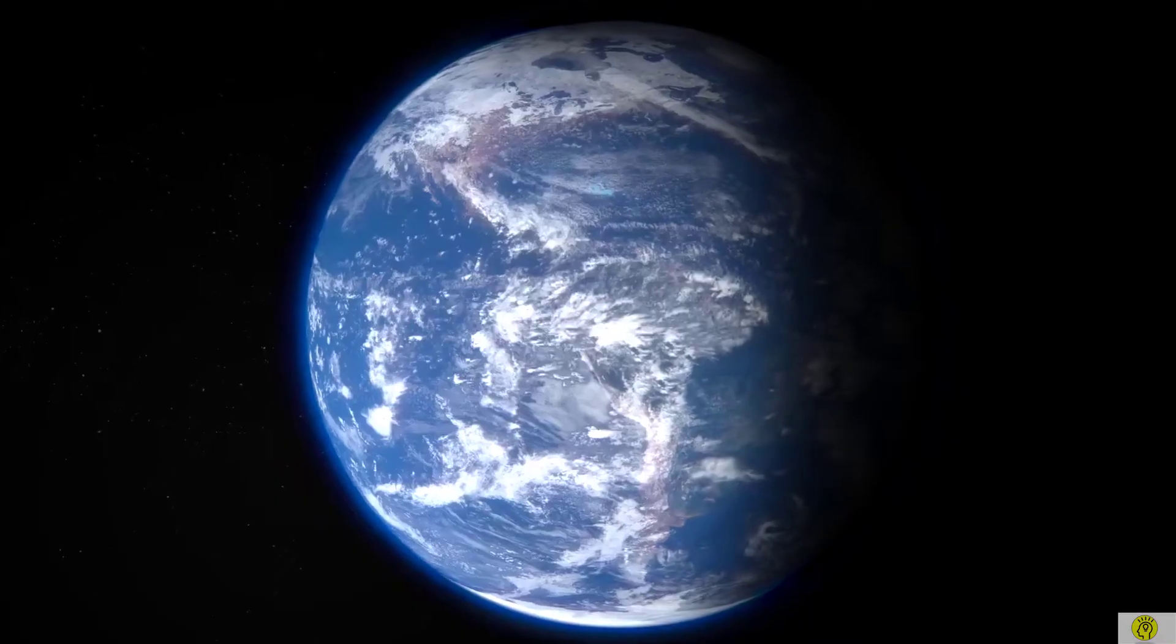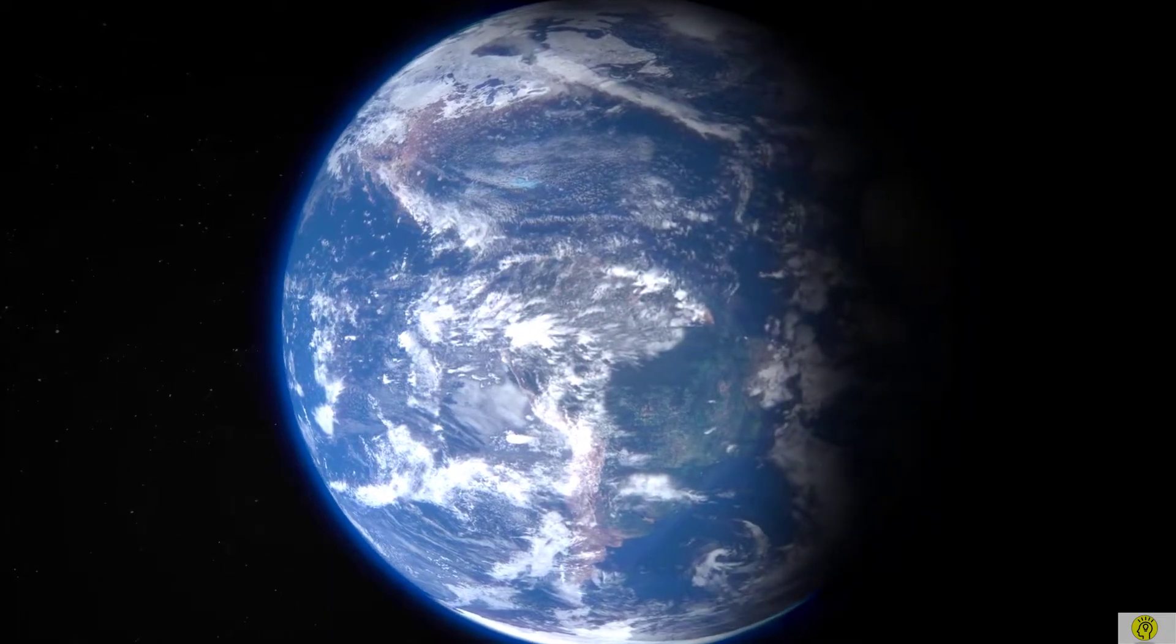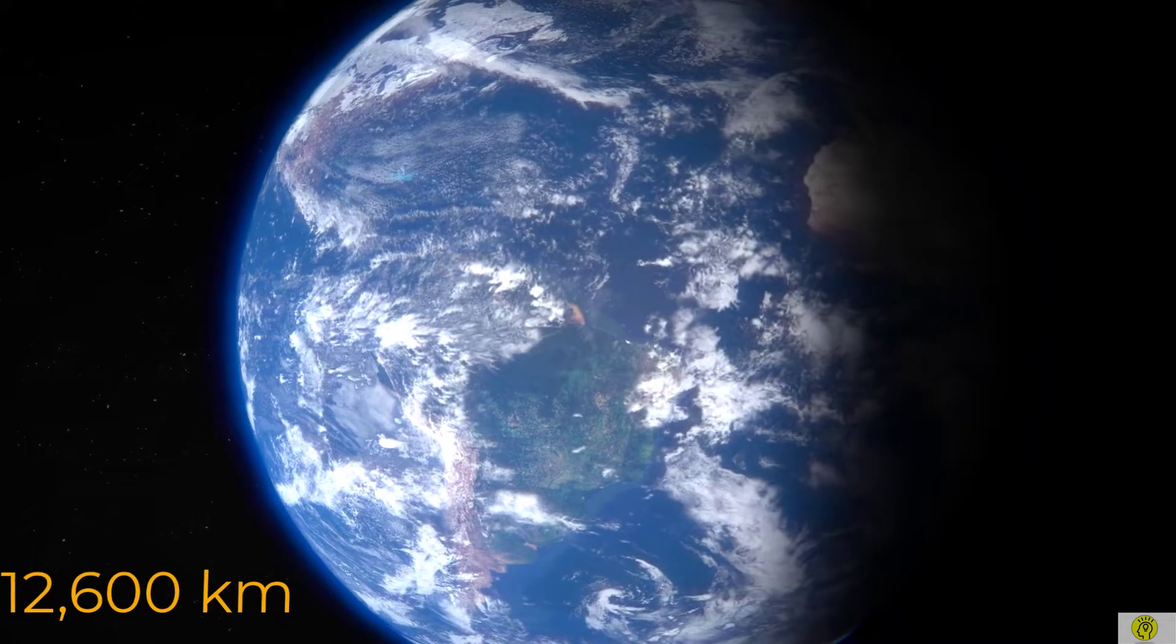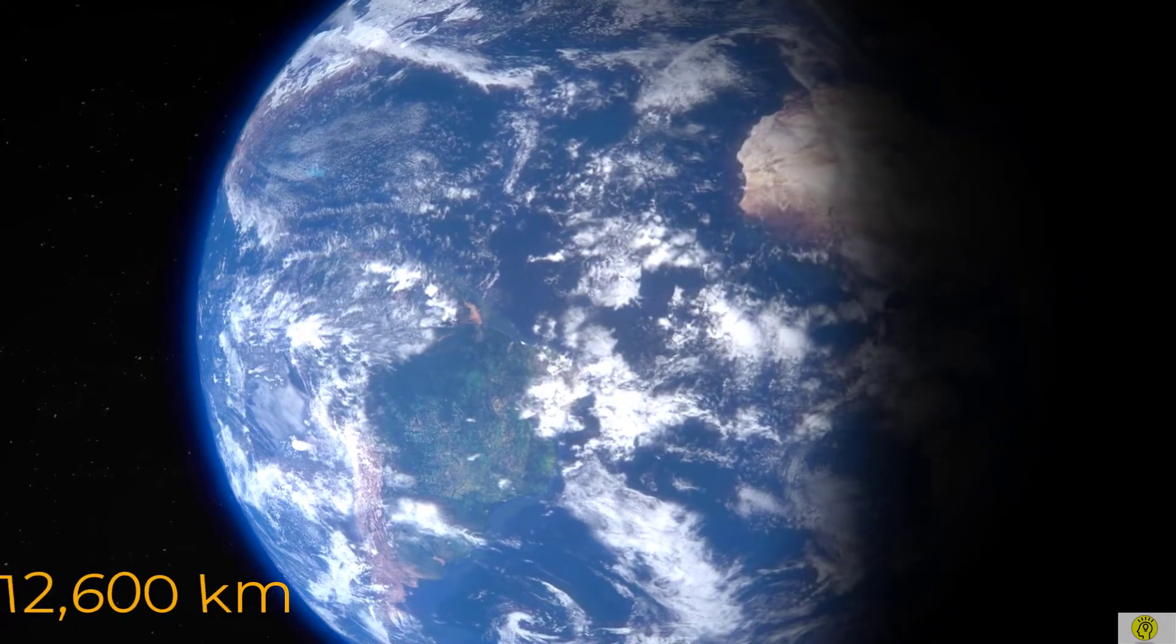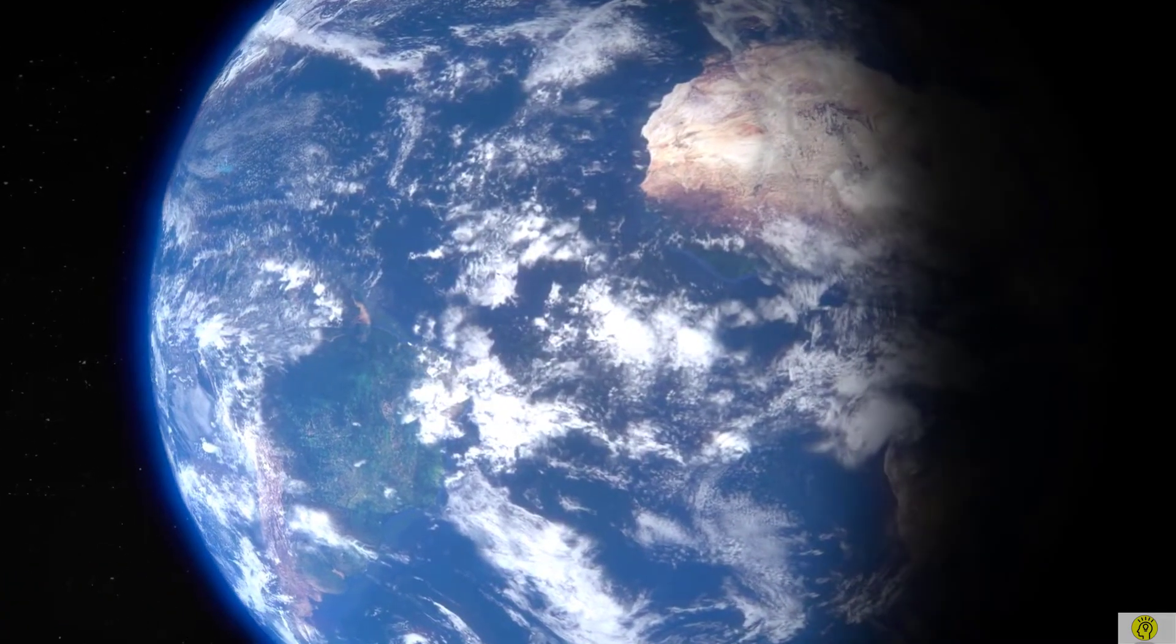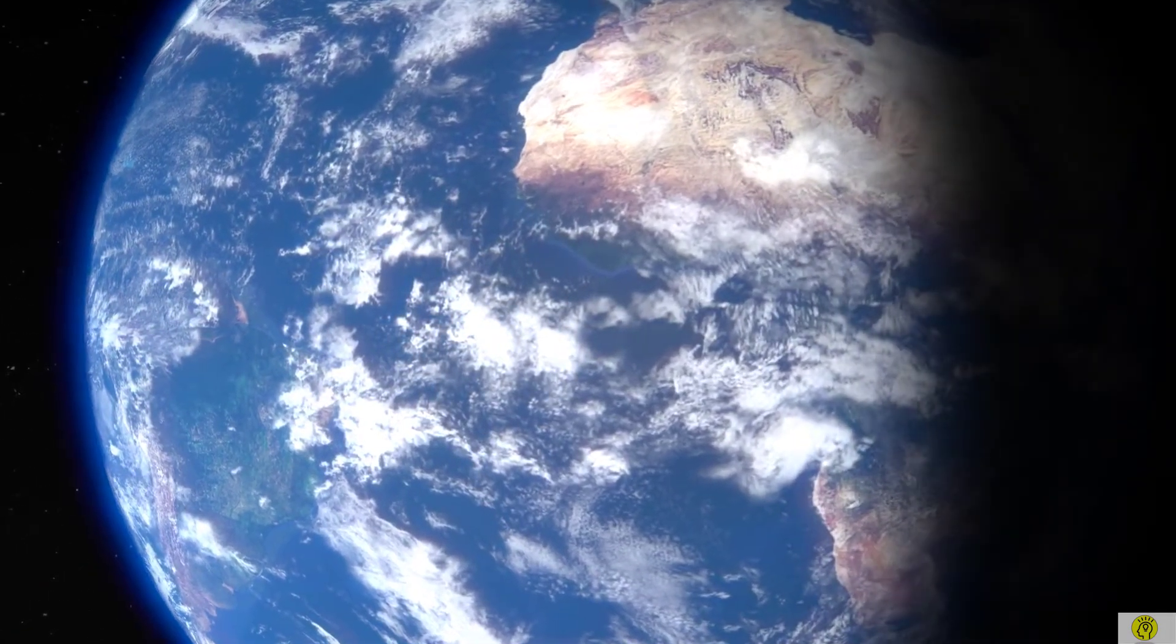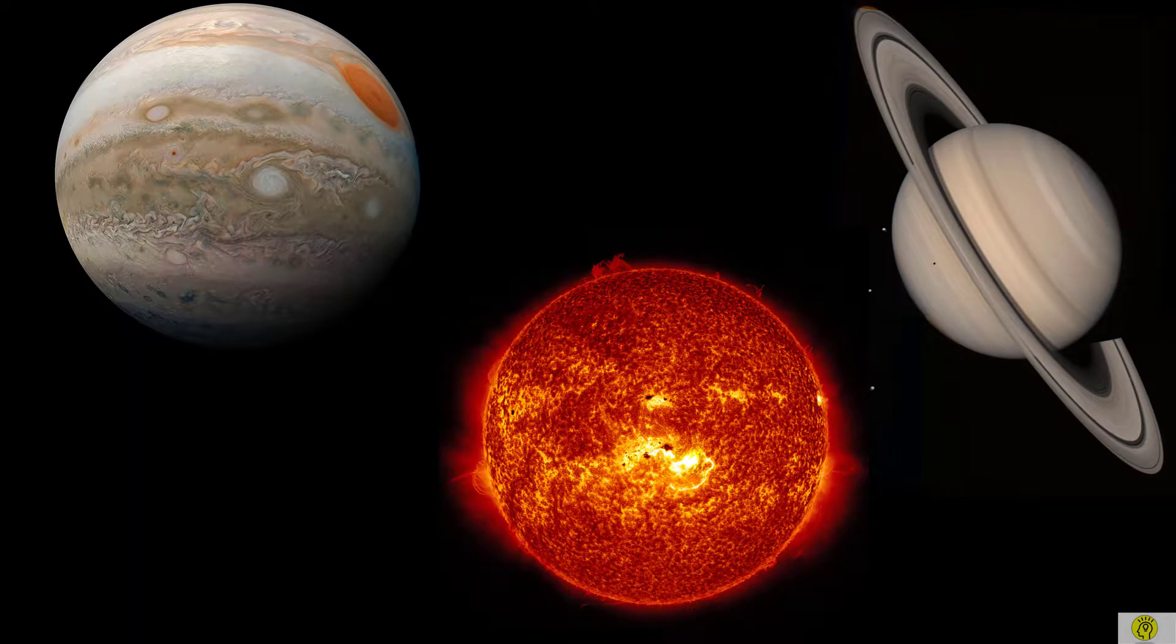Let's begin with the Earth, the planet that we are living on. Diameter of Earth is about 12,600 kilometers. But if we compare with other gaseous planets of our solar system such as Jupiter and Saturn and to the Sun, it is very small.